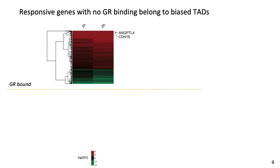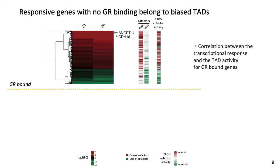This map shows the fold change of differentially expressed genes at 1 and 2 hours. This set of genes has evidence of regulation by the transcription factor GR. While annotating those genes with gains and losses of co-factors, we observe a correlation between activation and gains, and repression and losses of co-factors. While evaluating the co-factor activity of the TADs the genes belong to, we observe an arrangement of induced genes within activated TADs and repressed genes within repressed TADs. So there is a correlation between the transcriptional response and the TAD activity for GR-bound genes.